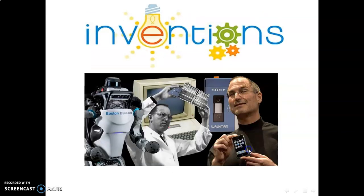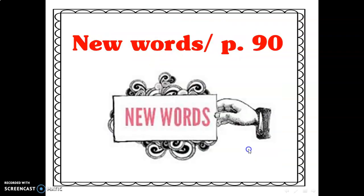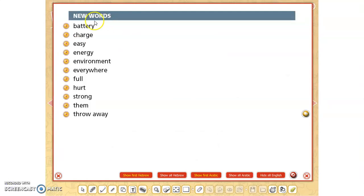Inventions. Let's go over the new words that are listed at the bottom of page 90. For more practice see the link below the YouTube video. The new words: battery, charge, easy, energy, environment, everywhere, full, hard, strong, them, throw away.